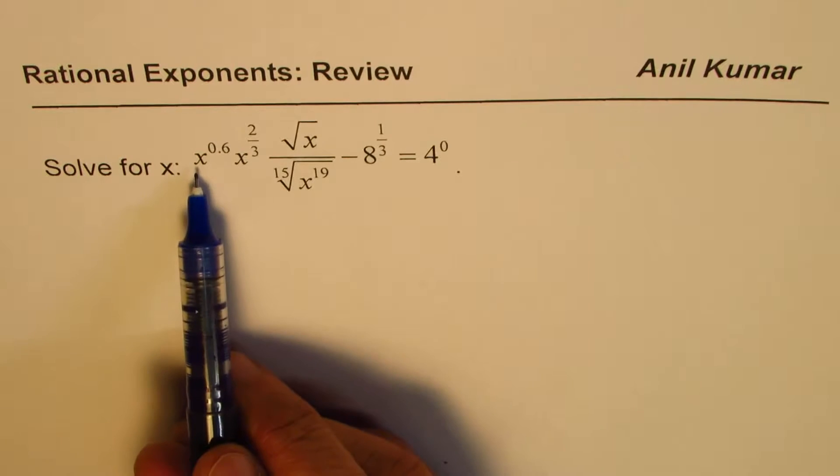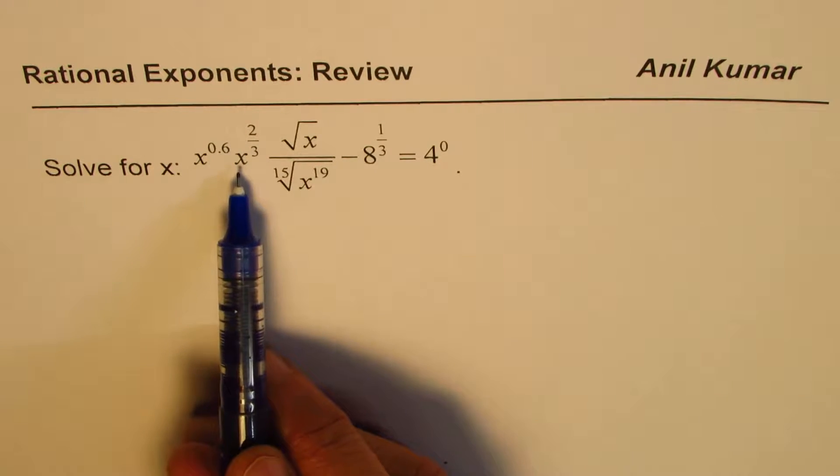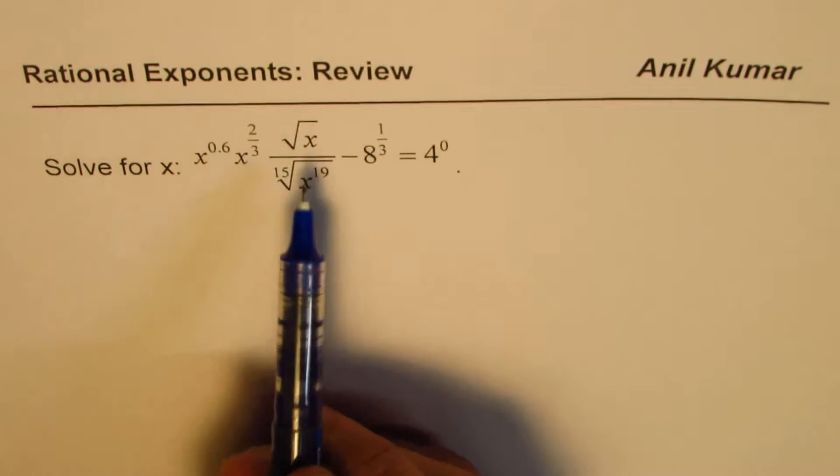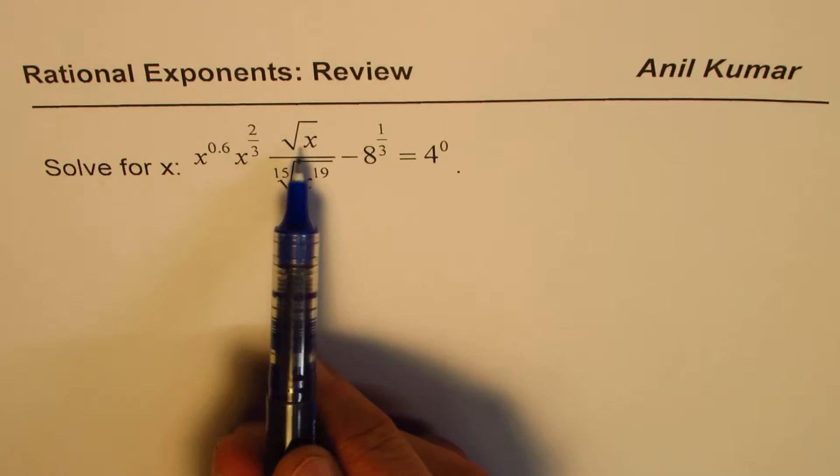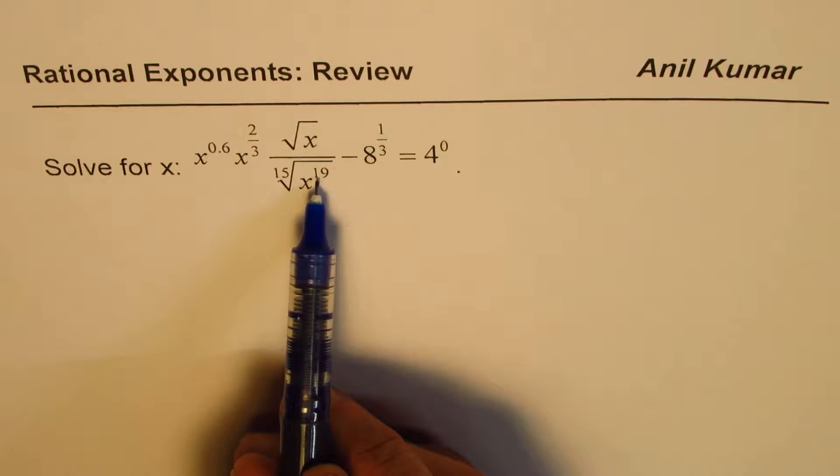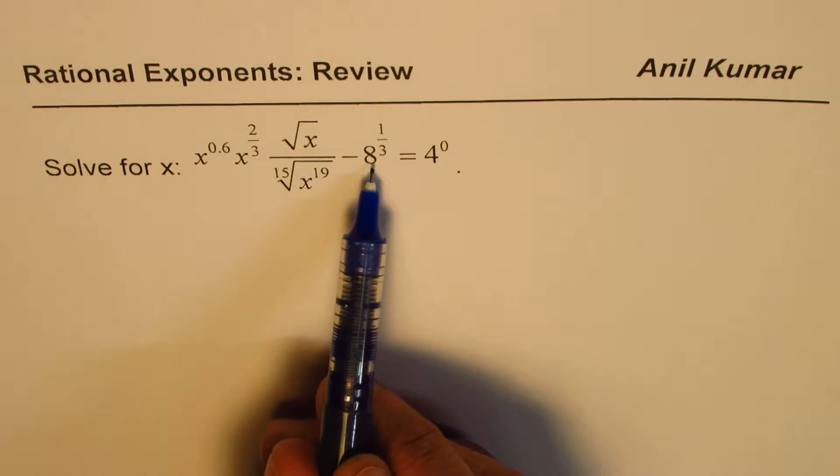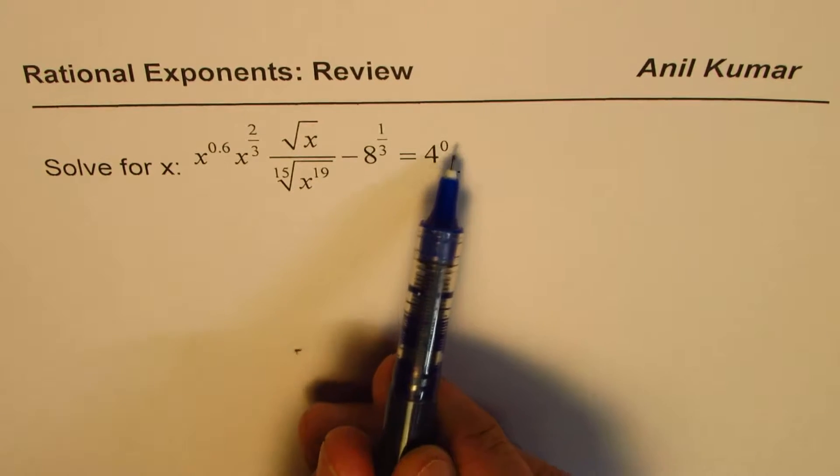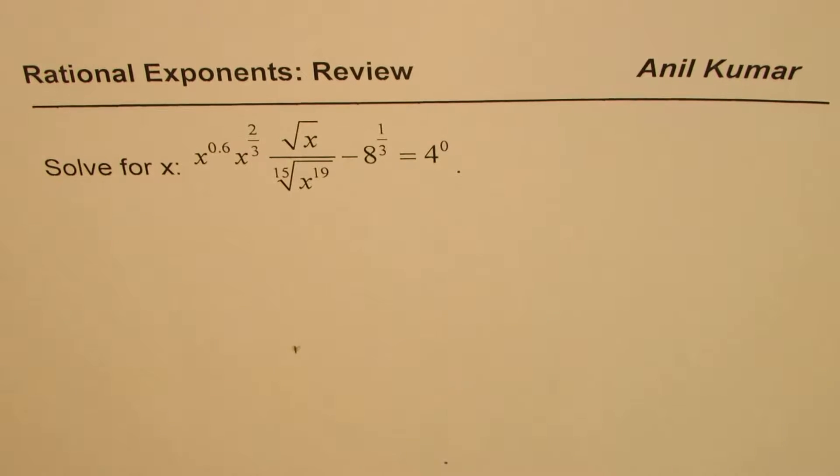The equation given is x^0.6 times x^(2/3) times square root x divided by the 15th root of x^19, minus cube root of 8, equals 4^0. You need to simplify this equation and find the value of x.